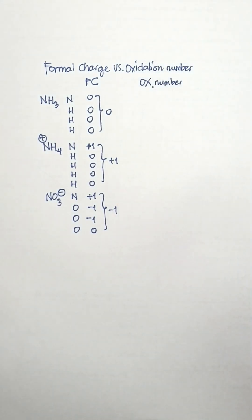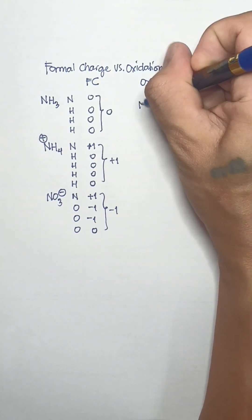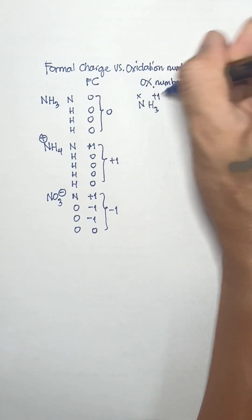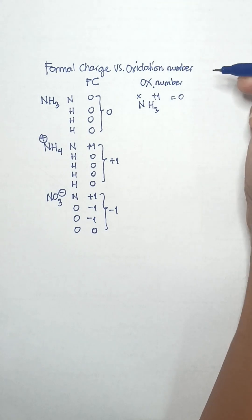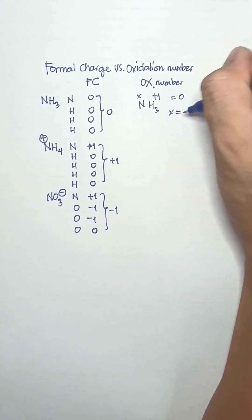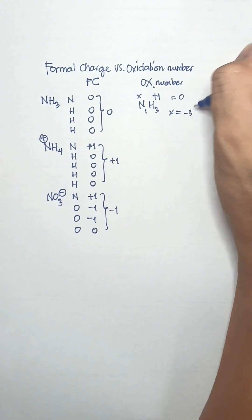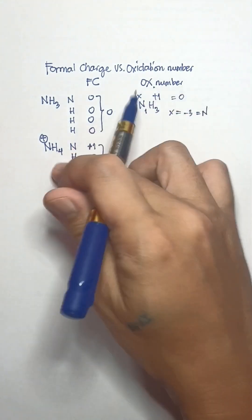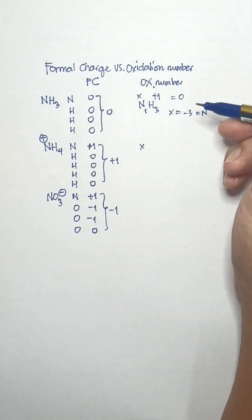From our knowledge in the previous video, oxidation number is an assigned number for an atom bonded to another atom in a molecular compound. The oxidation number of hydrogen in ammonia is plus 1, times the subscript of hydrogen which is 3, giving plus 3. Since ammonia is a neutral molecule, the overall charge must be 0, meaning nitrogen must have an oxidation number of negative 3.